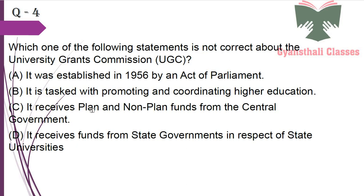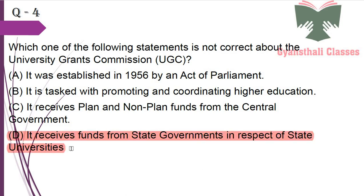Which one of the following statements is not correct about the University Grants Commission? It was established in 1956 by an Act of Parliament — yes; it is tasked with promoting and coordinating higher education — yes; it receives planned and non-planned funds for central development — yes; it receives funds from state governments in respect of state universities — no. This last statement is not correct about UGC.